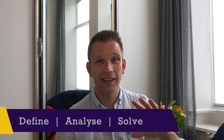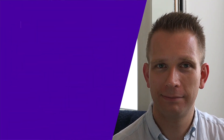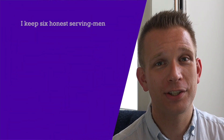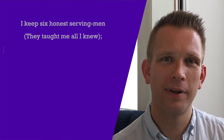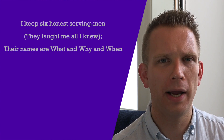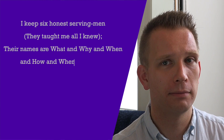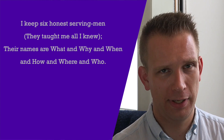Let's start with a broad overview. First you define a problem, you analyze the root causes, and then you solve. Now when we talk about defining a problem, let's start with a poem by Kipling. He wrote: 'I have six honest serving men. They taught me all I knew. Their names are What and Why and When and How and Where and Who.'